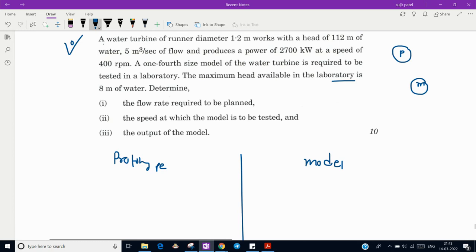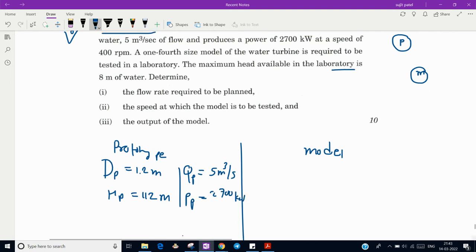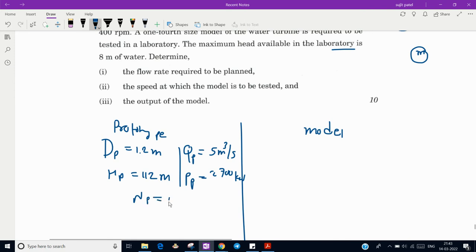A water turbine of runner diameter, the actual turbine, so for prototype diameter Dp is 1.2 meter, working with a head of 112 meter, with flow rate 5 meter cube per second, and it produces power 2700 kilowatt output. Now rpm is also given, that is 400 rpm.